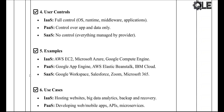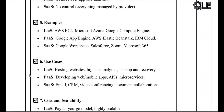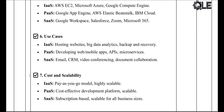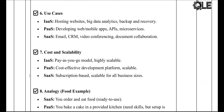Examples of each model: IaaS — AWS EC2, Google Compute Engine, Microsoft Azure. PaaS — Google App Engine, AWS Elastic Beanstalk, IBM Cloud. SaaS — Gmail, Google Docs, Salesforce, Zoom, Microsoft 365.